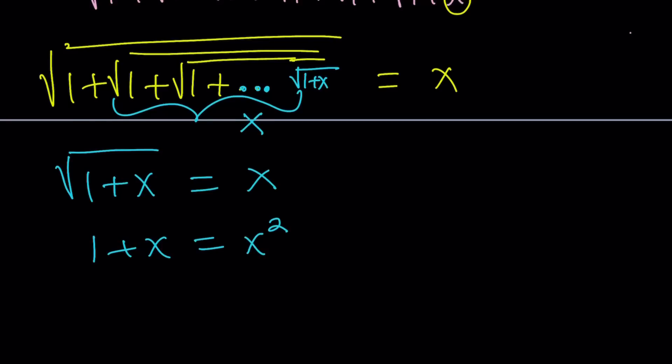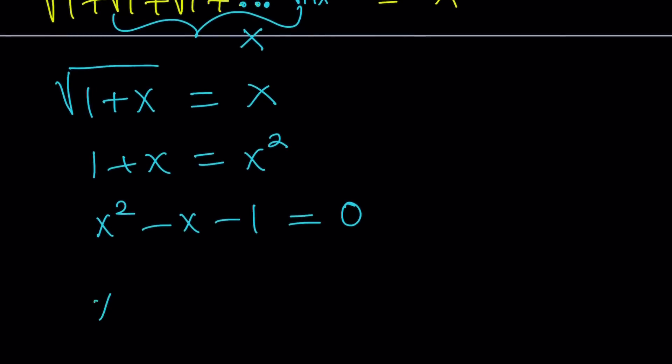We get 1 plus x equals x squared. Now put everything on the same side, x squared minus x minus 1 equals 0. This is a quadratic equation, right? So we can solve it using the quadratic formula. x equals negative b, which is 1, plus minus the square root of b squared, which is 1, minus 4ac, which is plus 4, 1 plus 4 equals 5, so this becomes square root of 5, and that is divided by 2.